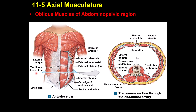If you cut the abdomen in this area you can see the rectus abdominis. They are connected in the middle by the linea alba. Here you have three different muscle layers: the external oblique, the internal oblique, and the transversus abdominis.